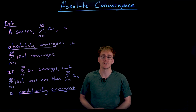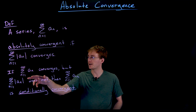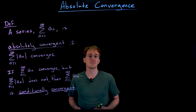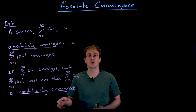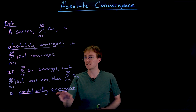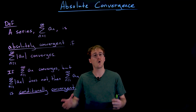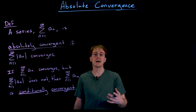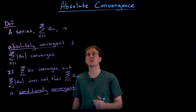Of course, this will not be the case with every series. Not every alternating series will be absolutely convergent. There is going to be the case where our normal series converges, but when we look at the sum of the absolute values of the terms, that does not converge. If that is the case, we say that our original convergent series is conditionally convergent — it is only converging because of those negative terms causing some nice cancellation.